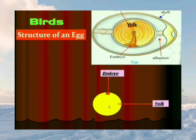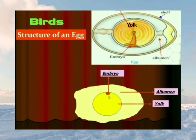The center of the egg is the yellow part called the yolk. The yolk contains the growing chick, or the embryo. With time, the embryo grows into a chick as you can see in the picture. The yolk also contains the food for the growing chick.